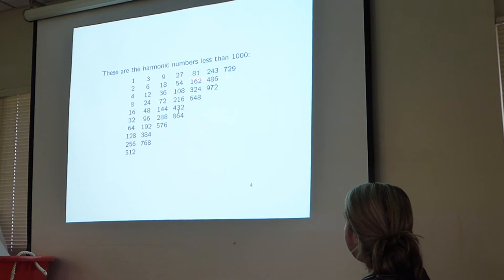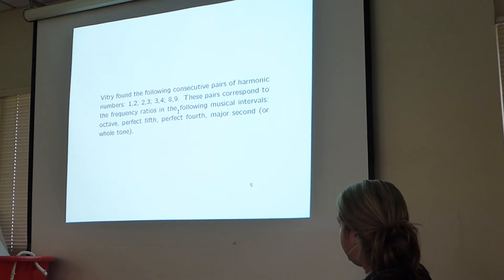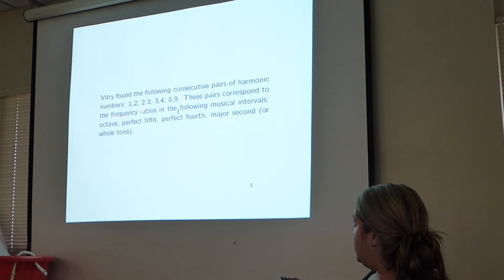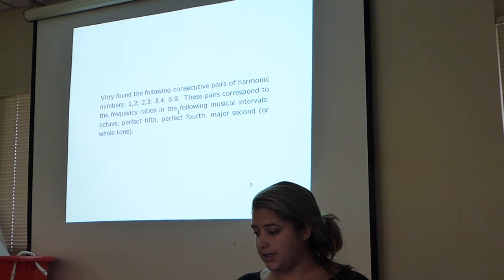Here is a chart of all the harmonic numbers less than a thousand. At the top are all the powers of 3, on the side are all of the powers of 2. Vitri found these 4 consecutive pairs of harmonic numbers: 1, 2; 2, 3; 3, 4; and 8, 9. These are actually ratios that correspond with music.